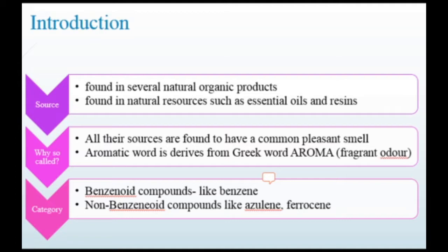Aromatic compounds, or arenes, may be bifurcated into two categories: benzenoid compounds like benzene, as well as non-benzenoid compounds like azulene and ferrocene.